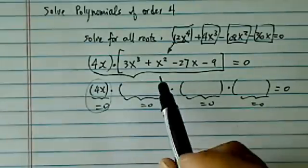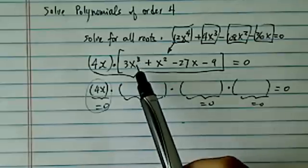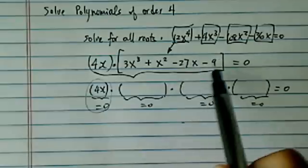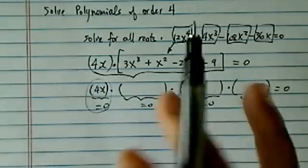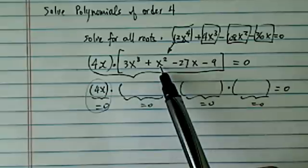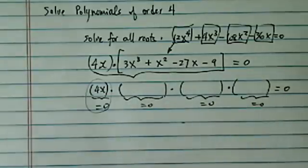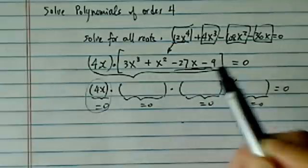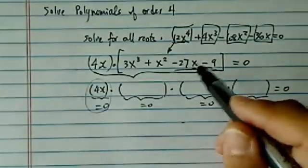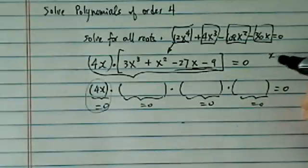So what we need to do is find the other three chunks. Now the best way to start is to figure out, experimentally, which number can put this one into a 0 without too much calculation. Obviously, if you put a 1 in there, it won't work. You have a 3 + 1 - 27 - 9, it's a little too big. This negative side is a little too heavy. So I went on 2.